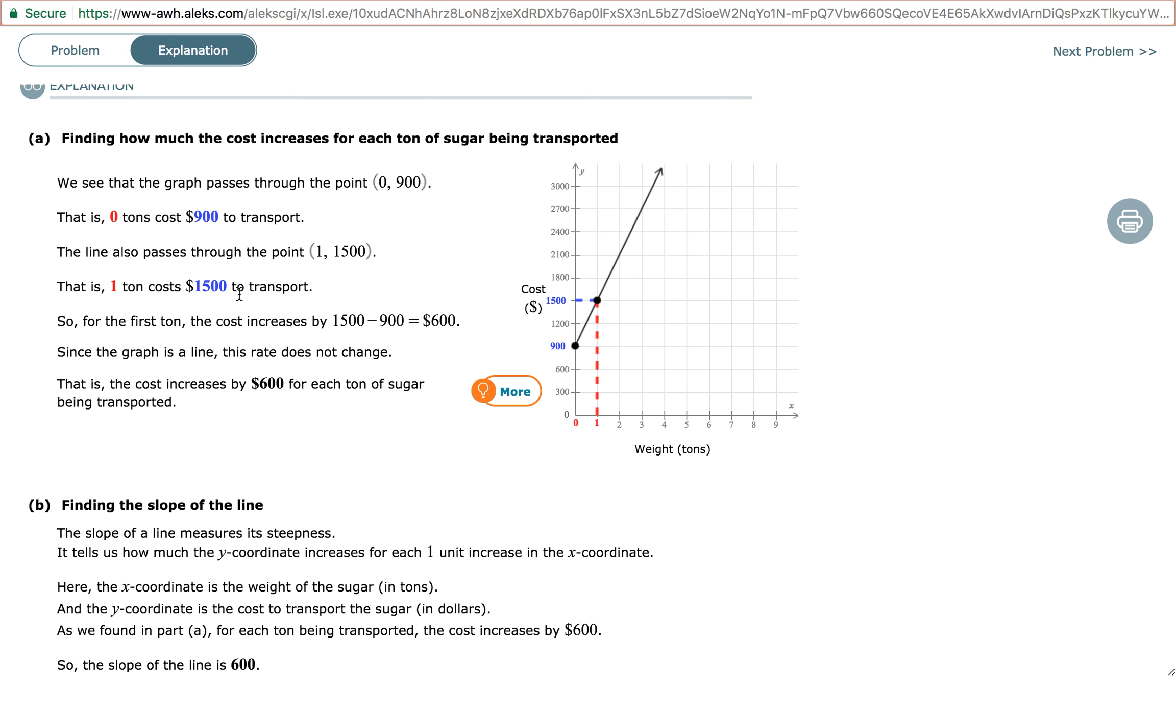So now, let's calculate that cost in dollars per ton using these two points. What is the difference in dollars here? From 900 to 1,500, we can find the difference by subtracting 1,500 minus 900, which is 600.